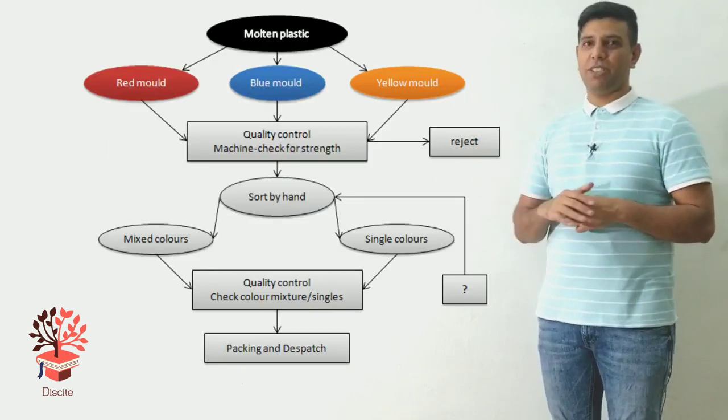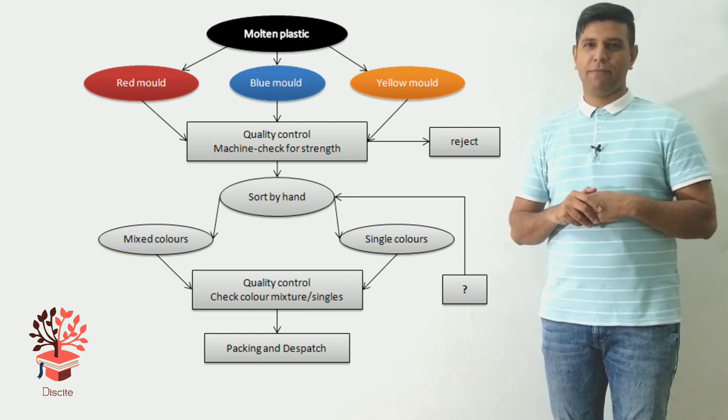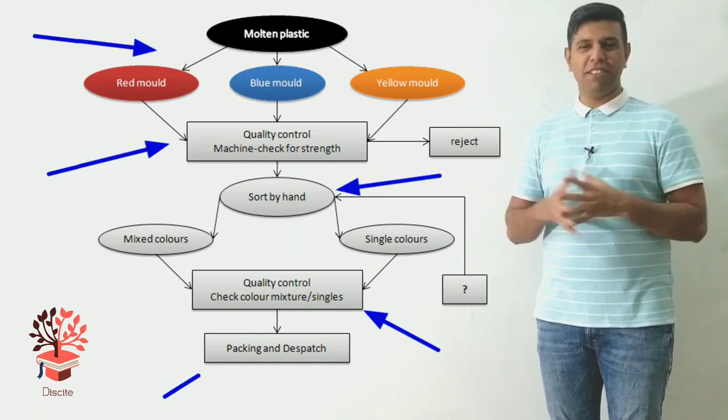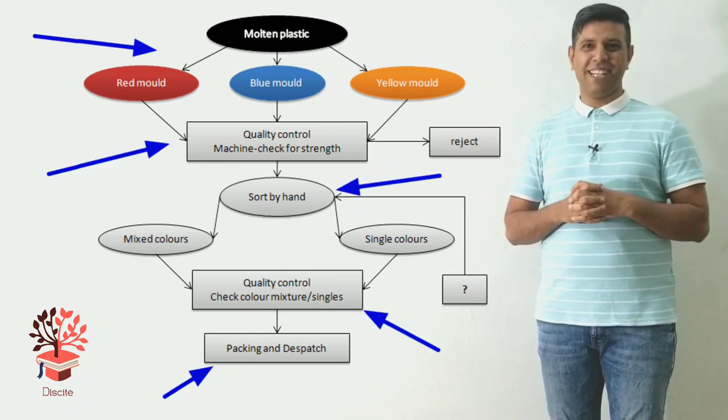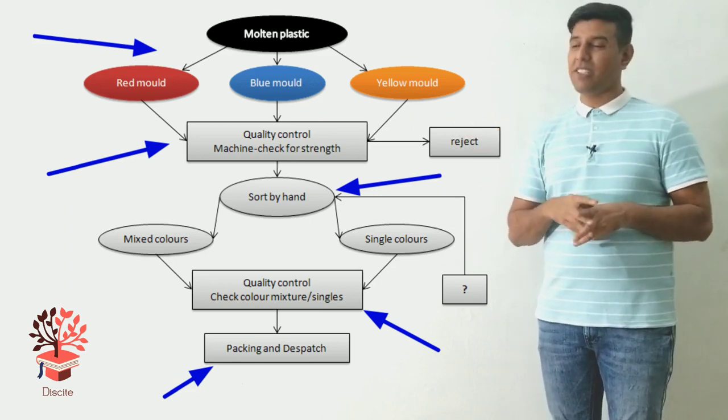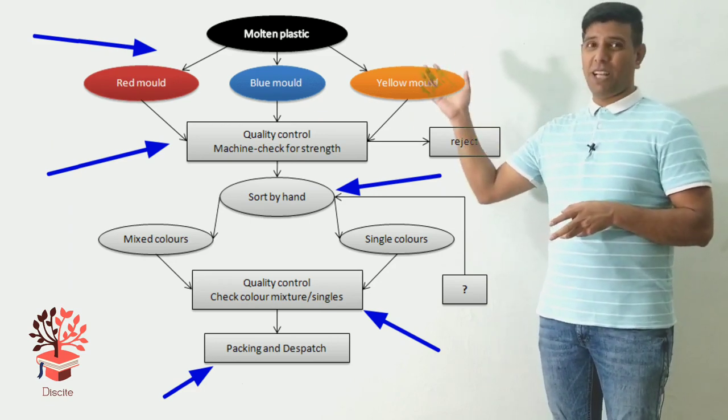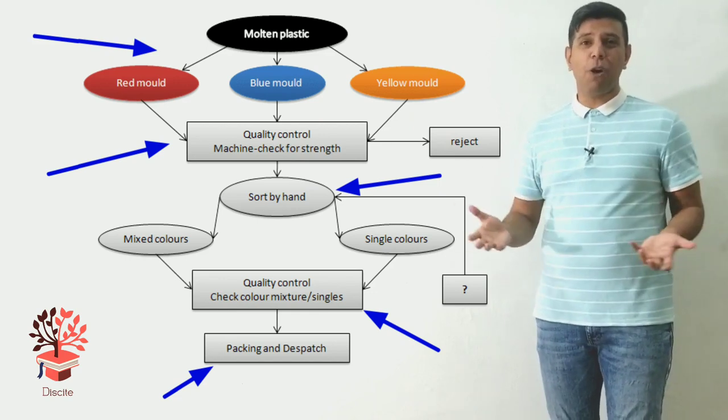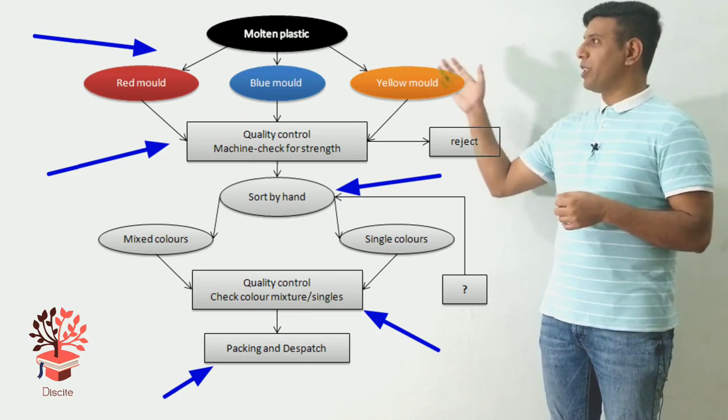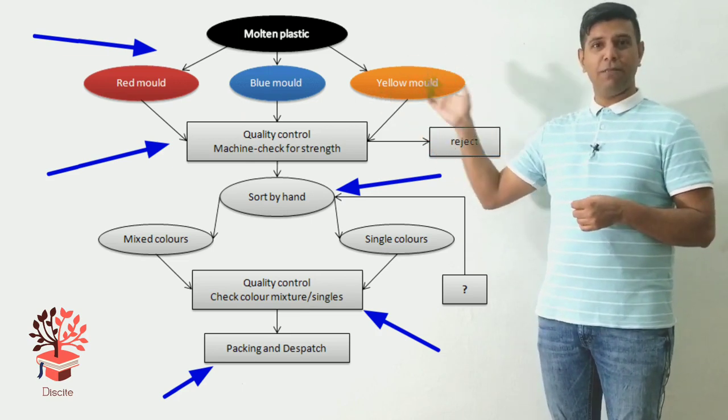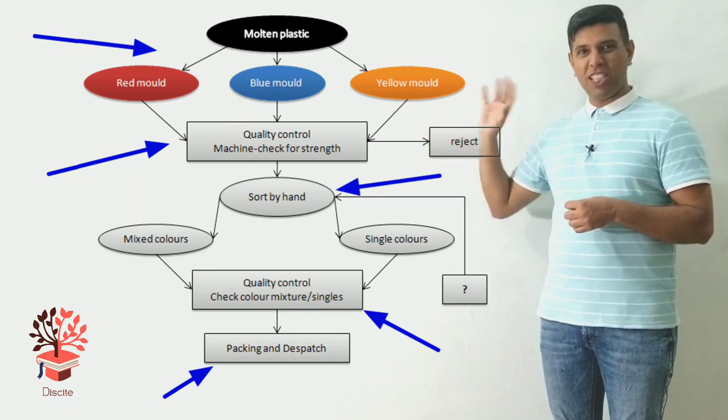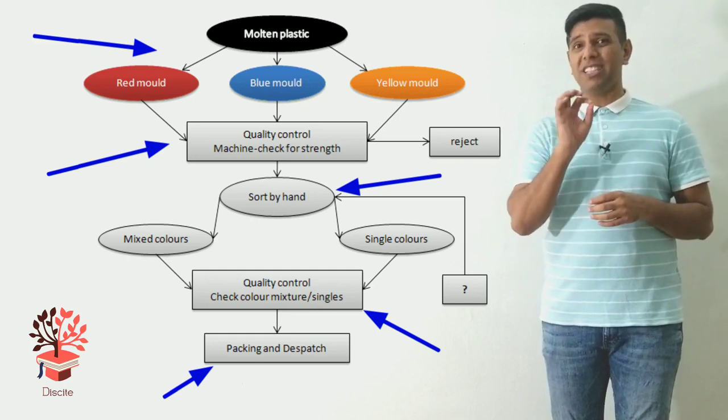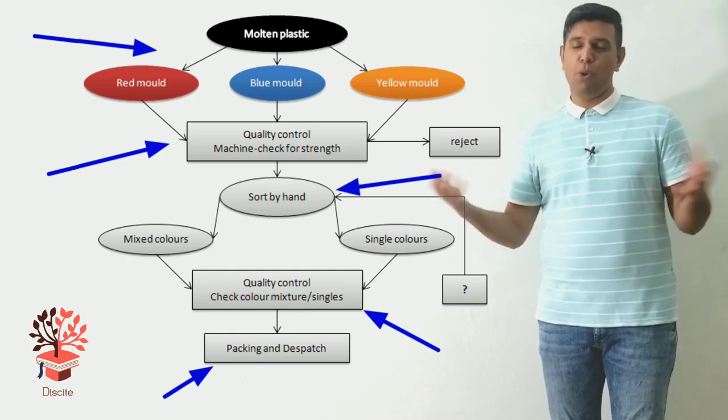So how many steps did you see there? Four, five, six, seven? I see five. So the first step is you pour the molten plastic. Molten plastic means liquefied plastic. Now, this is not a step. This is the raw material that we have. And we pour it into three colored molds - red, blue and yellow. That's the first step. Now, the second step is the quality control. It means the product is already made. When it comes out of the mold, the product is ready.